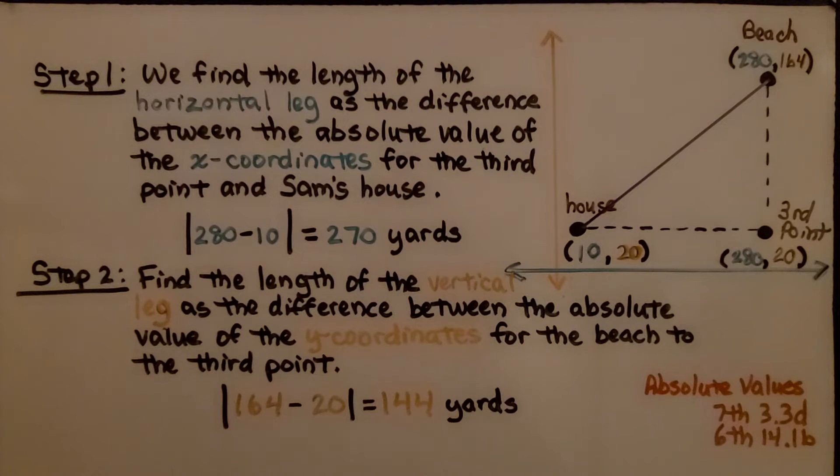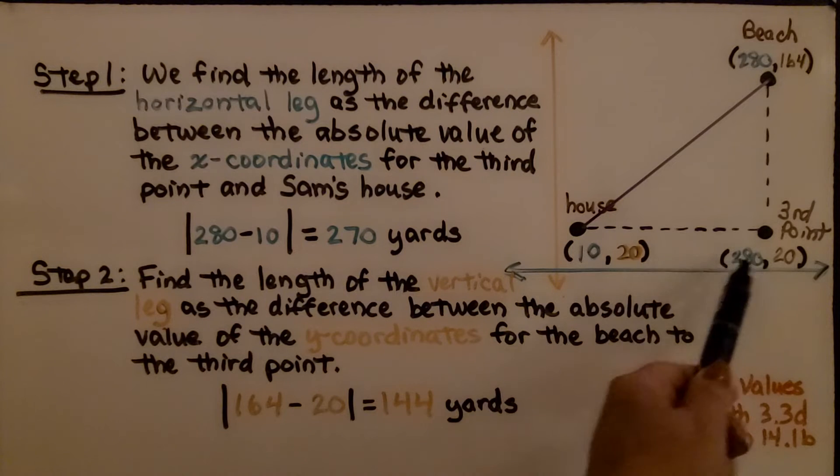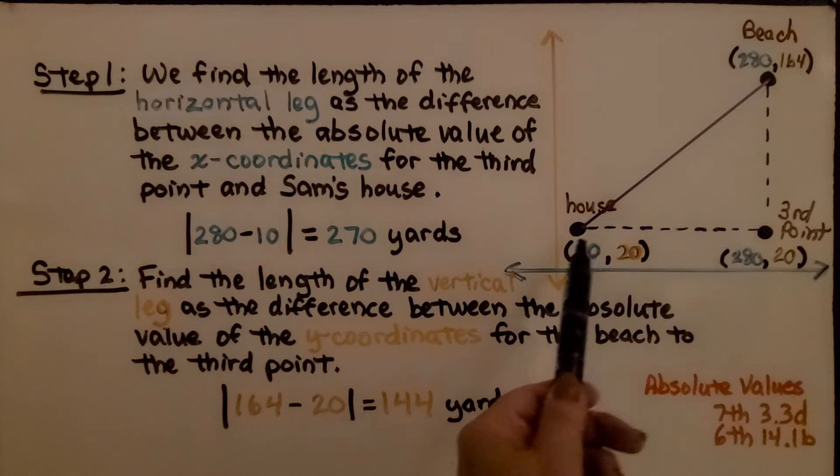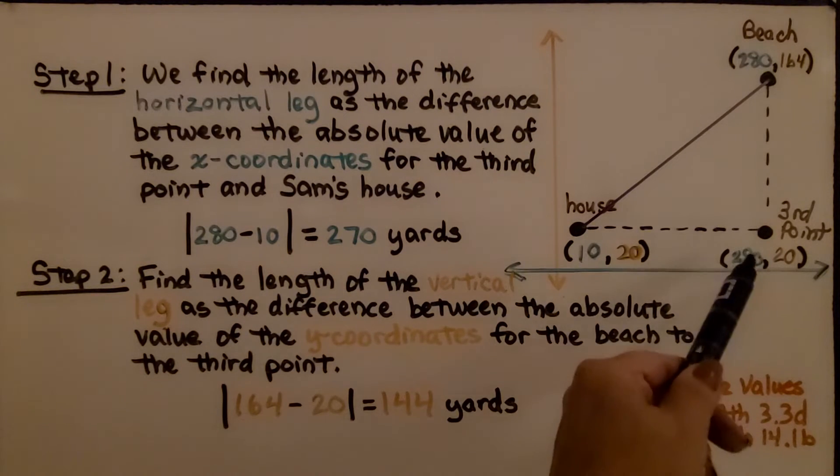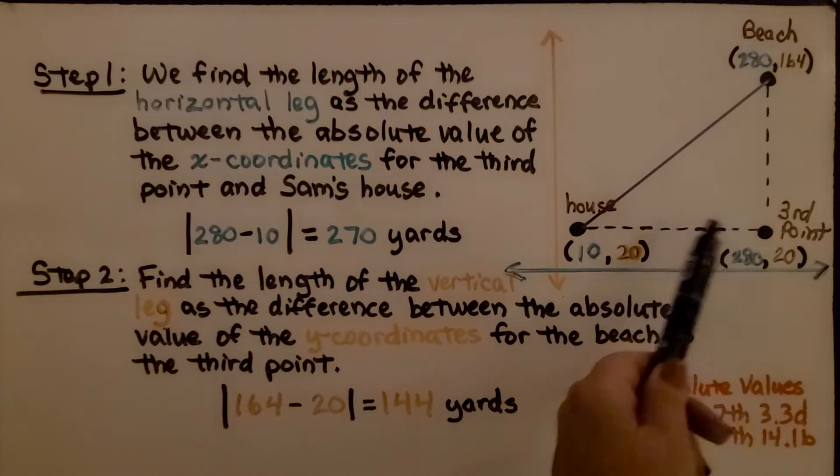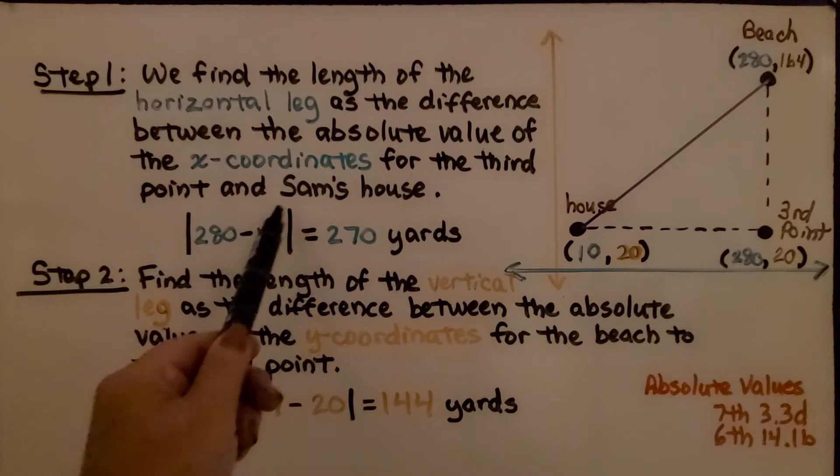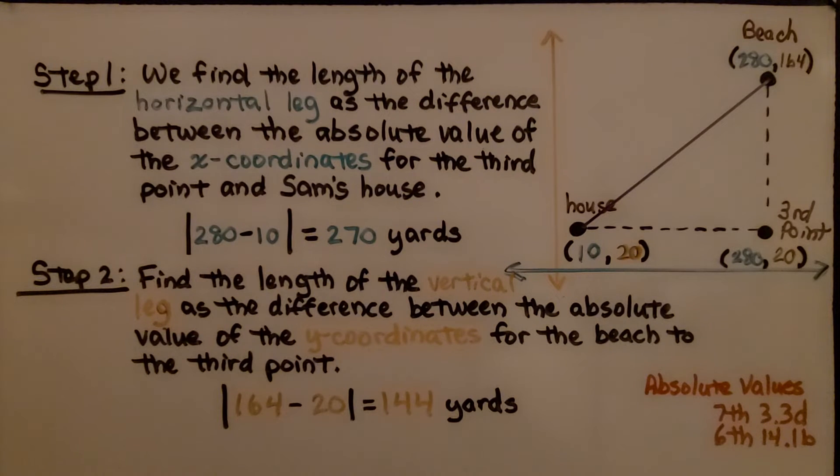For step one, we find the length of the horizontal leg as the difference between the absolute value of the x coordinates for the third point and for Sam's house. We have the x values of 280 and 10. We subtract them to find their absolute value. That is 270 yards.